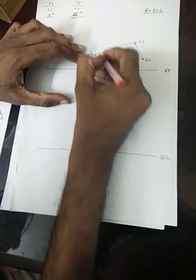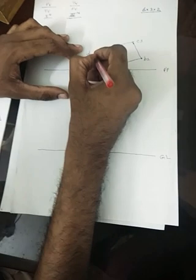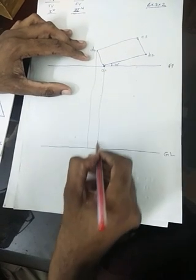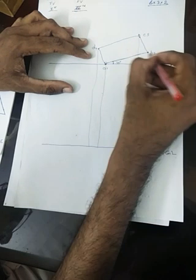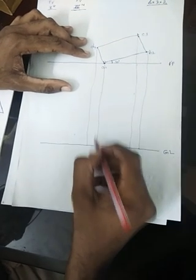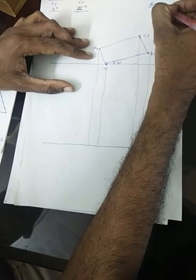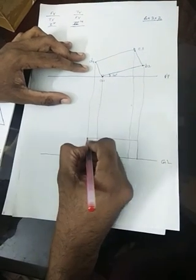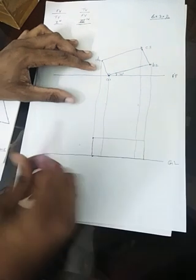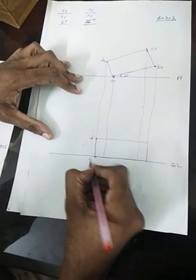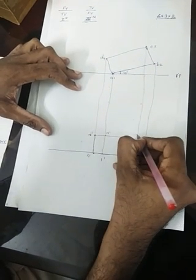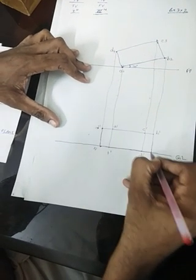Next I have to project all these points and draw the front view. I project all points vertically down to the ground line. The height of the solid is 2 centimeters, so from the ground line I draw a 2-centimeter line and complete the front view of the rectangular block, with corners D'4', A'1', C'3', and B'2'.